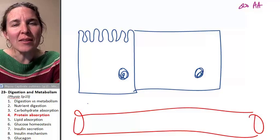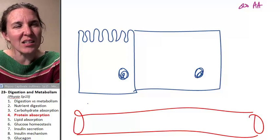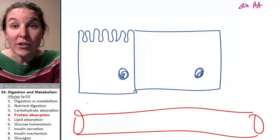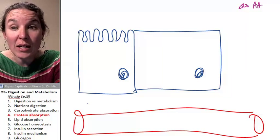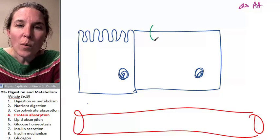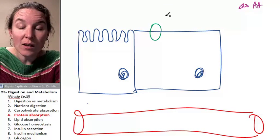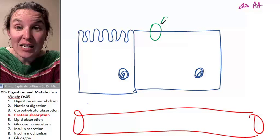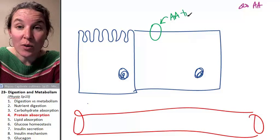So that right there should make you think, should make you wonder, how are we going to get these things, how are we going to get amino acids into the mix? Well, we actually have many different kinds of amino acid transporters.